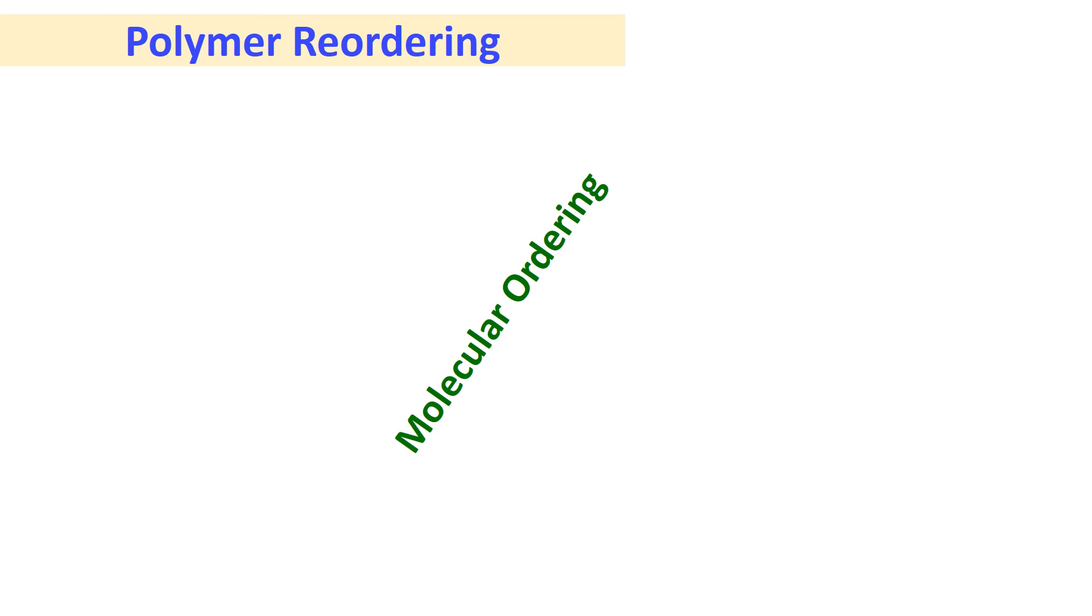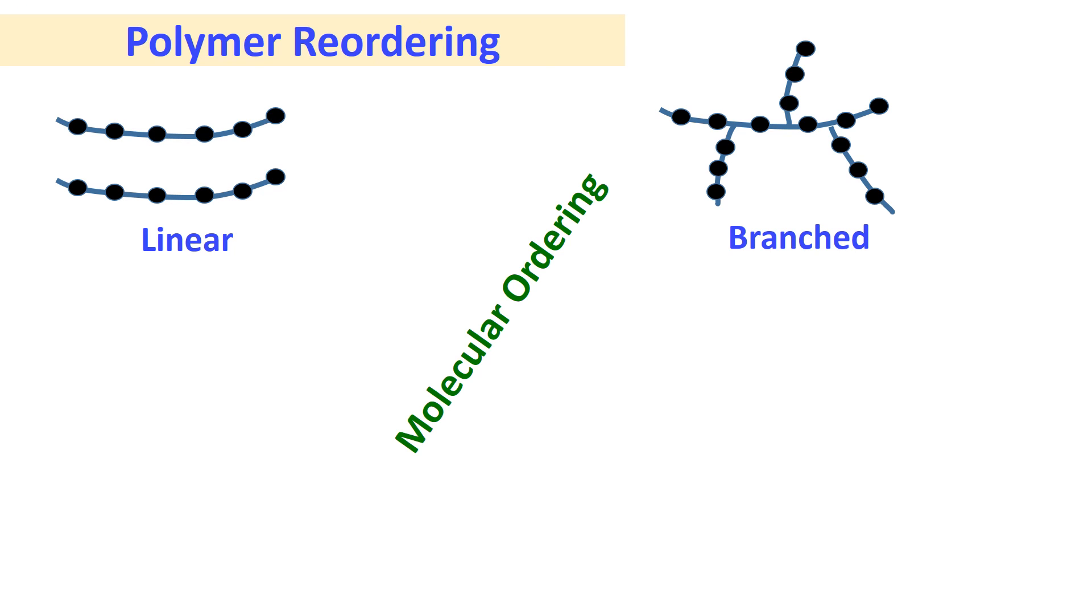In this slide, we can observe molecular ordering in polymeric molecular chains, for example, linear ordering, branch ordering, cross-linked ordering, and network ordering.